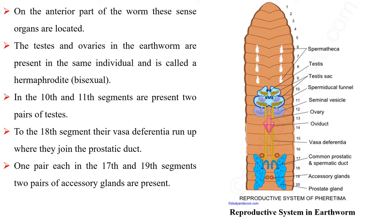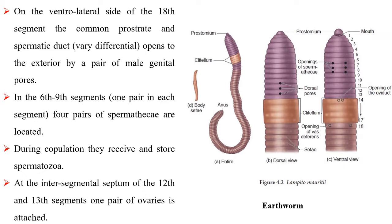The testis and ovaries in the earthworm are present in the same individual and it is called a hermaphrodite. In the 10th and 11th segments are present two pairs of testes. Their vasa deferentia run up to the 18th segment where they join the prostatic duct, one pair each. In the 17th and 19th segments, two pairs of accessory glands are present. On the ventrolateral side of the 18th segment, the common prostatic and spermatic duct opens to the exterior by a pair of male genital pores.